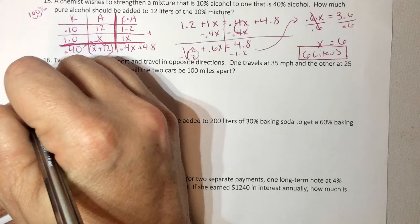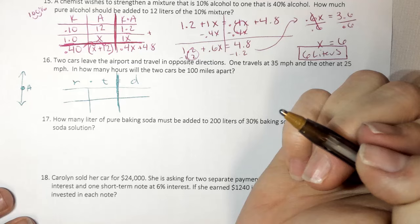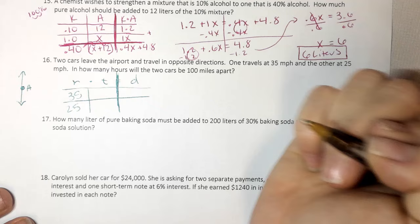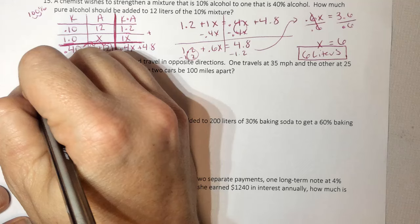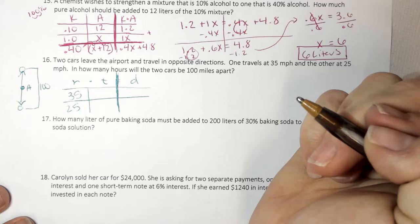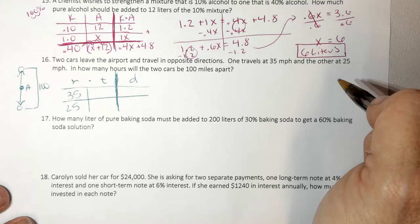So here's the airport. One's going north and the other one's going south. One travels 35 miles an hour. And the other travels at 25. And how many hours will the 2 cars be 100 miles apart? So if here's a car and here's a car, we want to know when they're 100 miles apart. Because it doesn't specify two cars leave the airport, I'm assuming they left at the same time, so x and x.